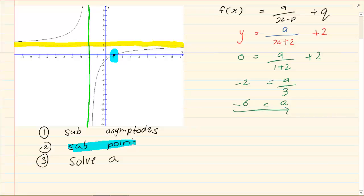Now rewrite it. That is important. So our final answer is f of x is equal to minus 6 over x plus 2 plus 2.